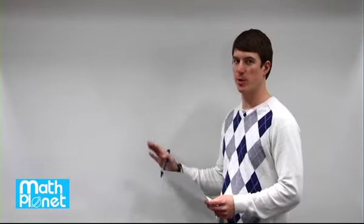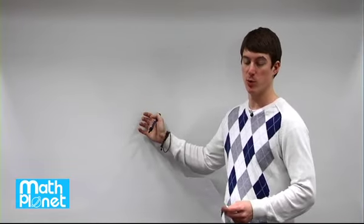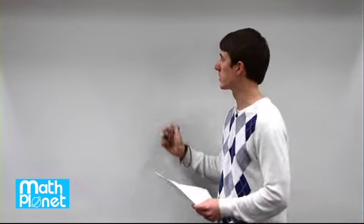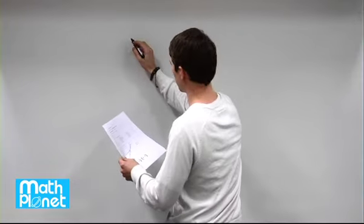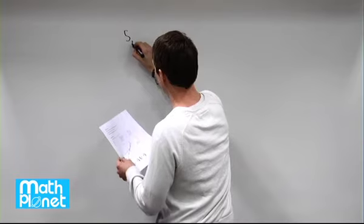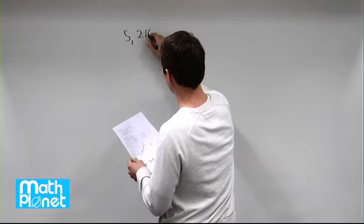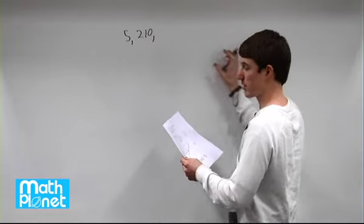Here we have two numbers and we want to express these numbers in a more standard or scientific notation. So let's see, we have this first number, 5, 2, 1, 0, and then we've got several sets of zeros after that.